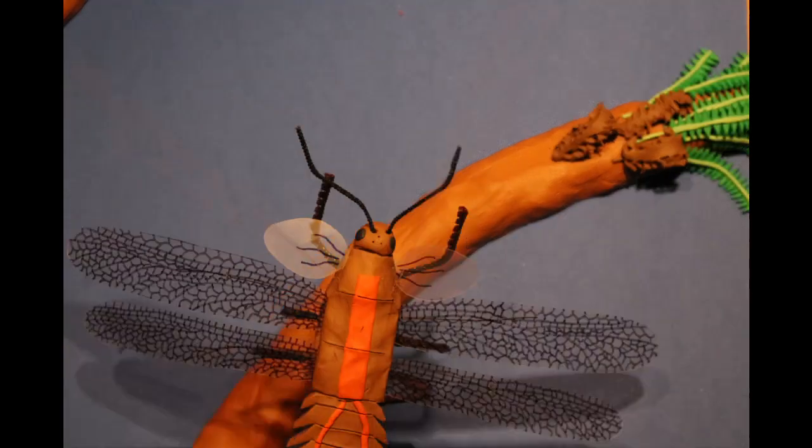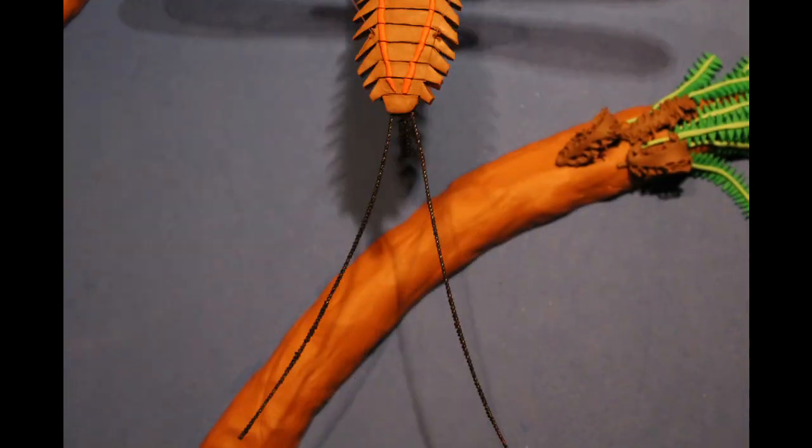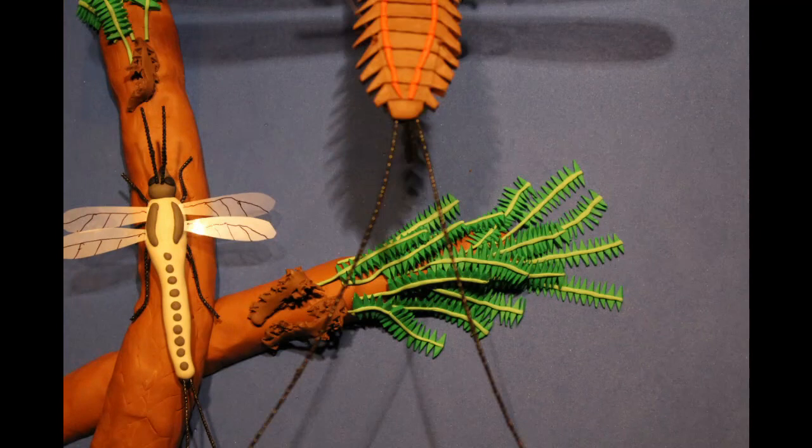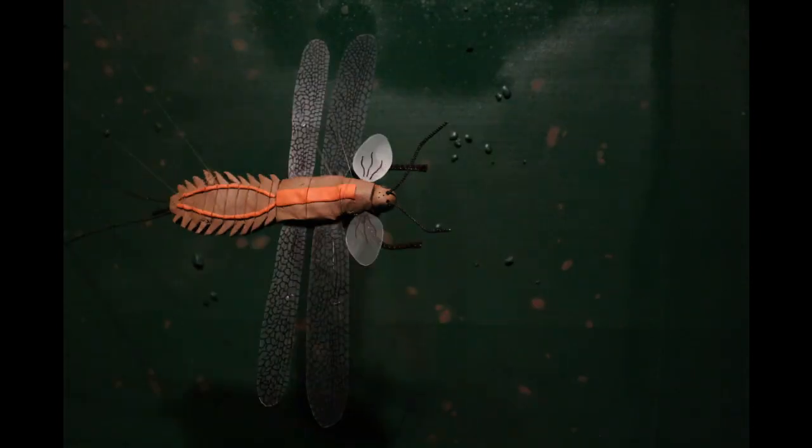Many species were larger than robins, their growth aided by the high oxygen levels of the Carboniferous atmosphere, yet even these were prey to the griffinfly.